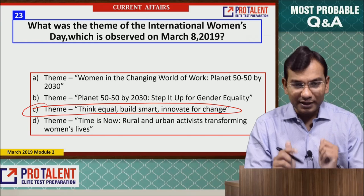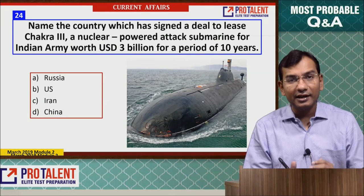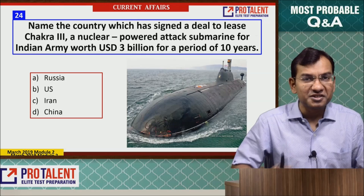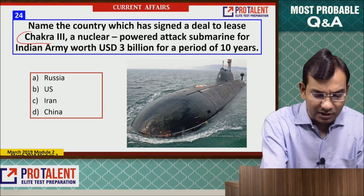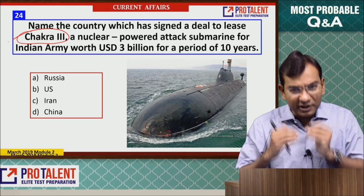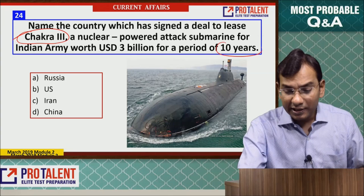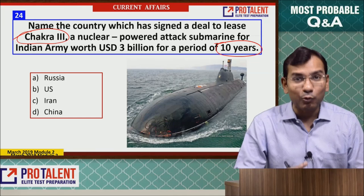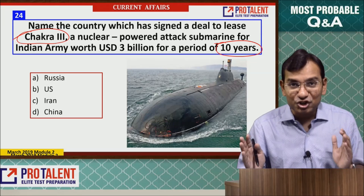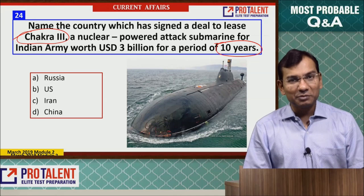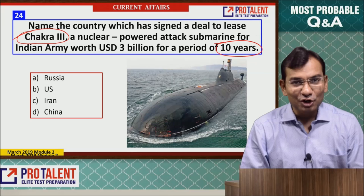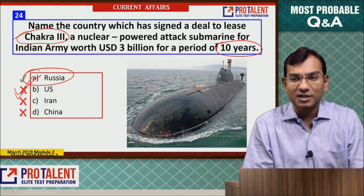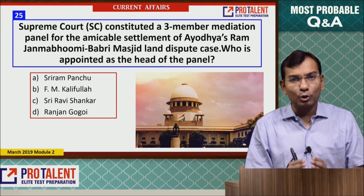Question 24: Name the country which signed a deal with India to lease a nuclear-powered submarine for the Indian Navy. The submarine is named Chakra 3, leased by India for 10 years. Being nuclear-powered, it can stay underwater for 6-7-8 months, greatly enhancing Indian Navy capability. The country is Russia.